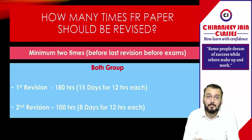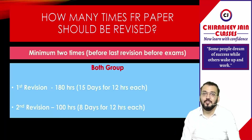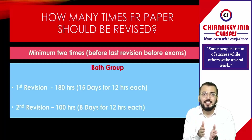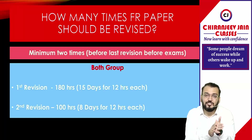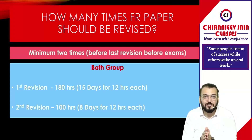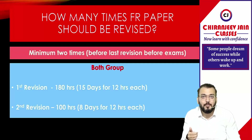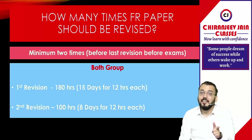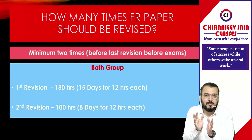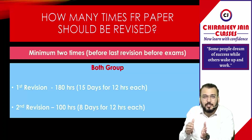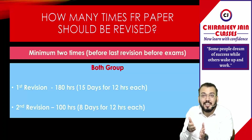Coming to the next question: how many times should the FR paper be revised before the last revision? From my point of view, before the last revision you should revise two times every subject in the last five months. For this purpose, divide the entire five months into three parts: the first part consisting of three months (90 days), the second part consisting of the next 50 days, and the third part consisting of the last 10 days. The last 10 days are for the last revision, so they are not counted for this discussion. The 50-day second part is for the second revision of all subjects of both groups. I will come with a new video on how to do the second revision.